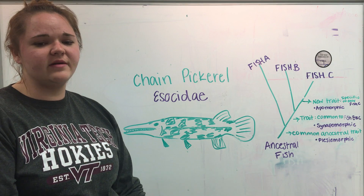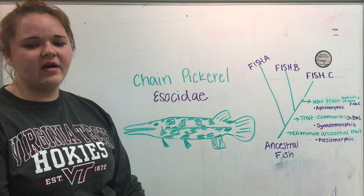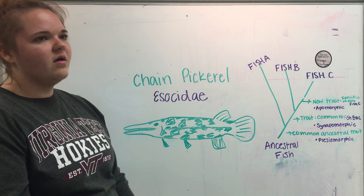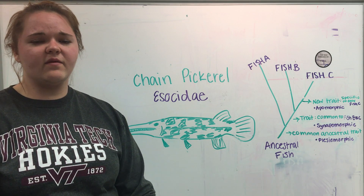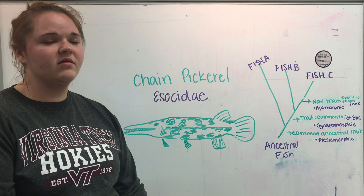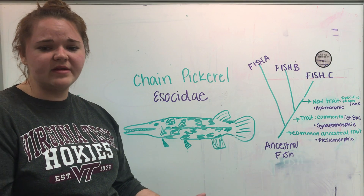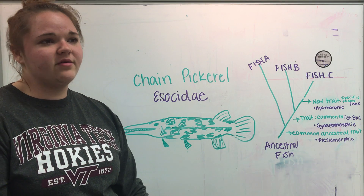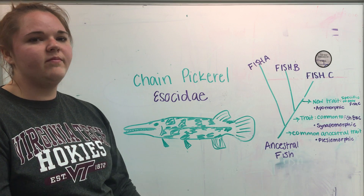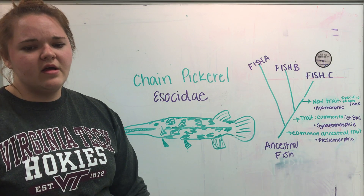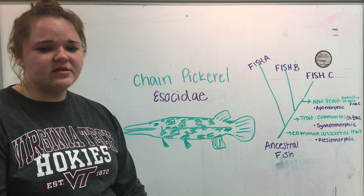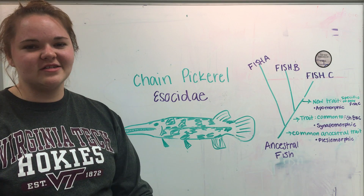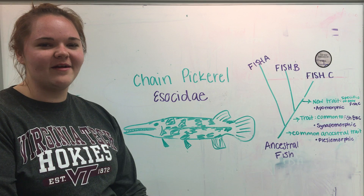One of the more common uses for cladograms today is comparing and understanding adaptations through time and evolution. For instance, if we found a fish like the lungfish, when did lungs come into the mix? Could we show that lungs are a more recent adaptation rather than a bigger opercular opening? Cladograms are used to both disprove and validate hypotheses about adaptations through time. Thanks for learning more about cladograms with me.